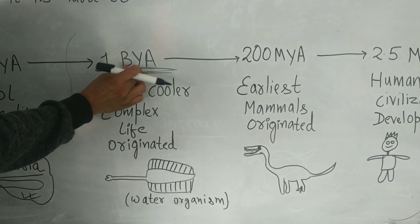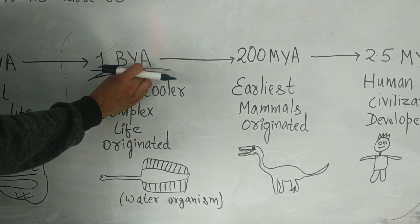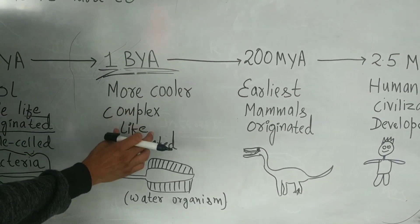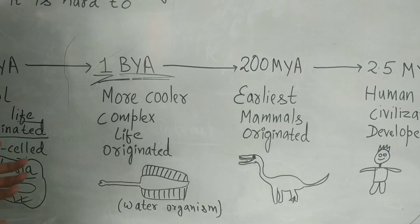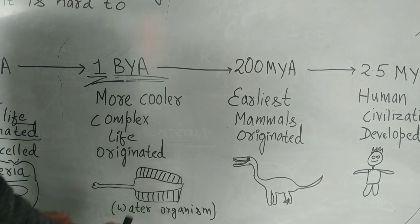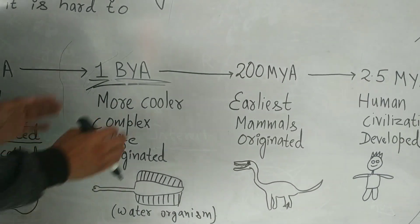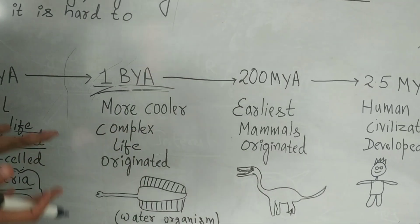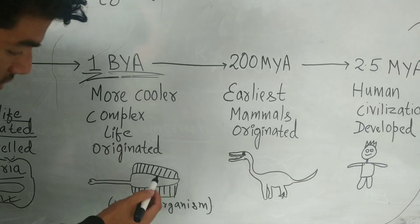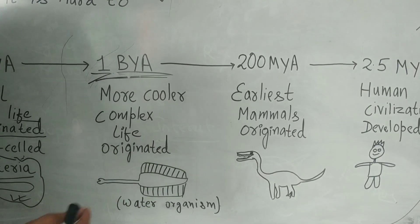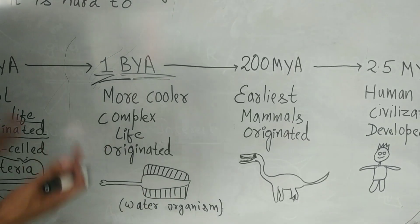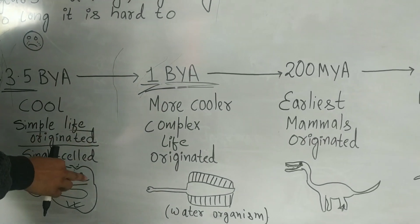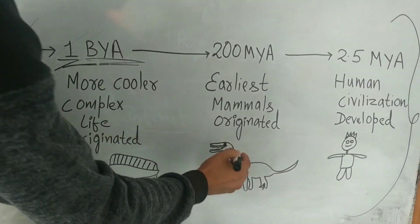Around 1 billion years ago, as the Earth became cooler, more complex life originated. During this time there were still no human beings. As you can see in this picture, there were water organisms — more complex and more advanced compared to the previous era.